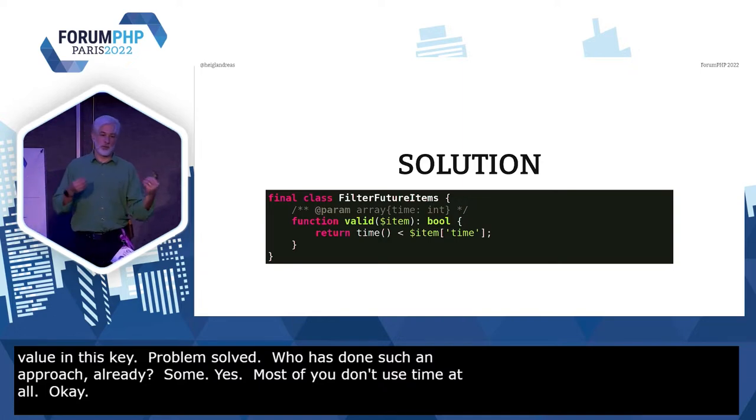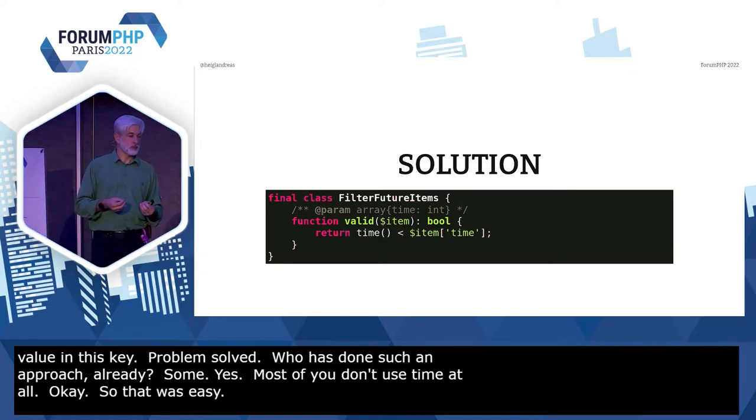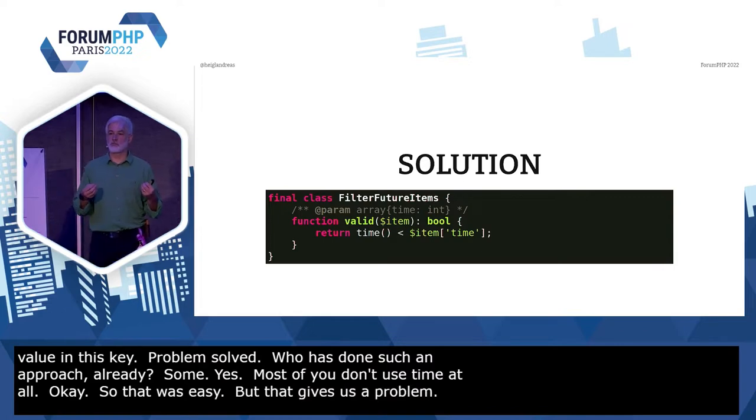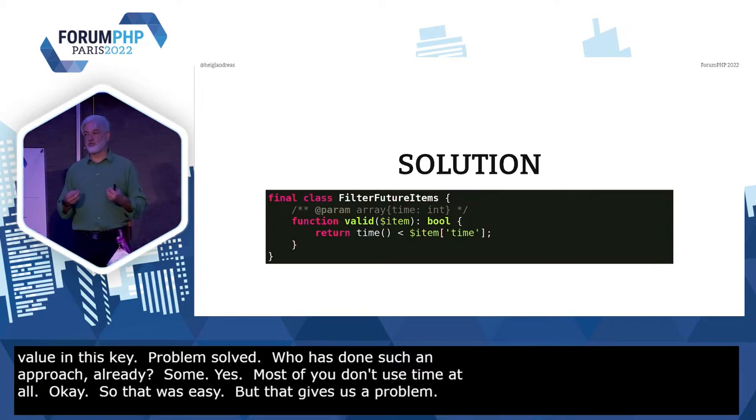This item has a key with an integer as value, and we just return whether the response from the `time()` function is smaller than the value in this key. Problem solved. Who has done such an approach already? But that gives us a problem.